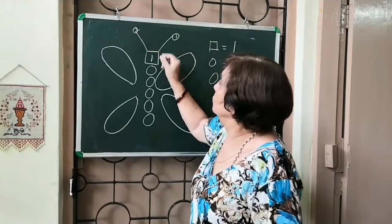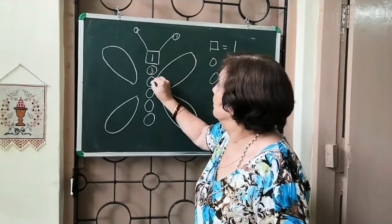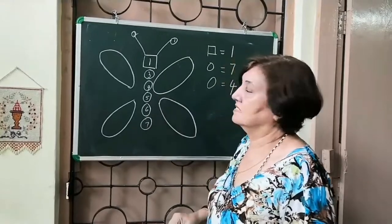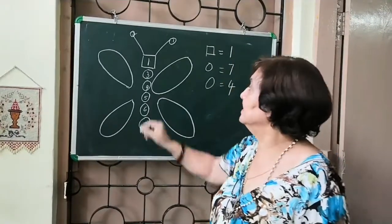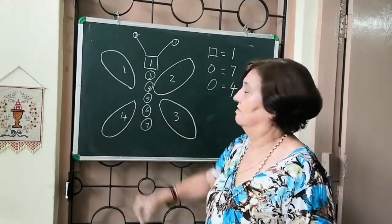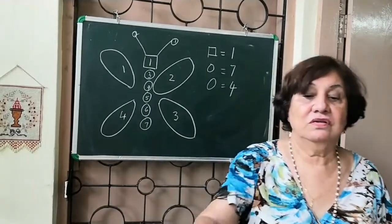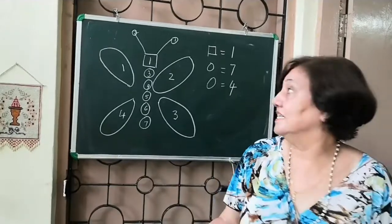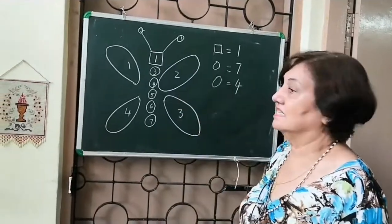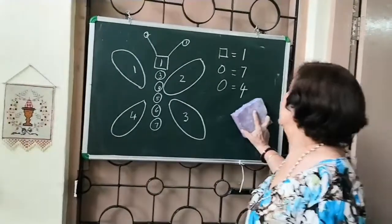One, two, three, four, five, six, seven. And how many ovals? One, two, three and four. So, you have just seen that in this butterfly, how many squares, how many circles and how many ovals there are.